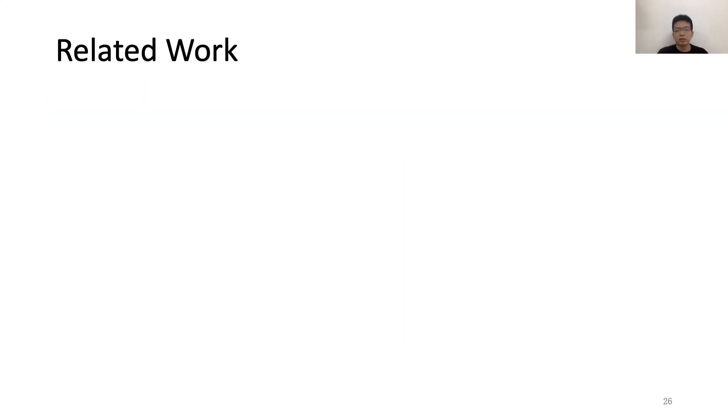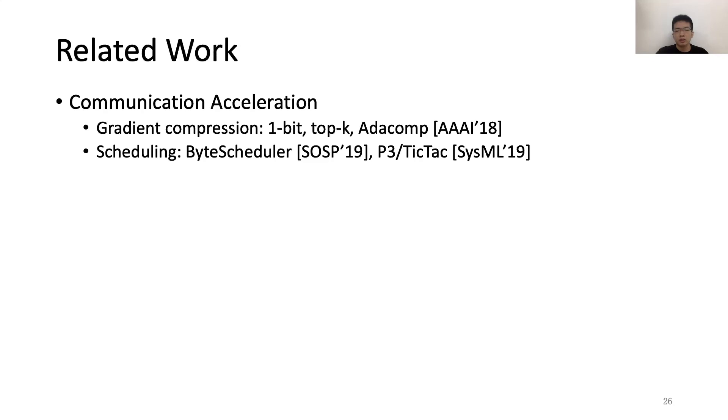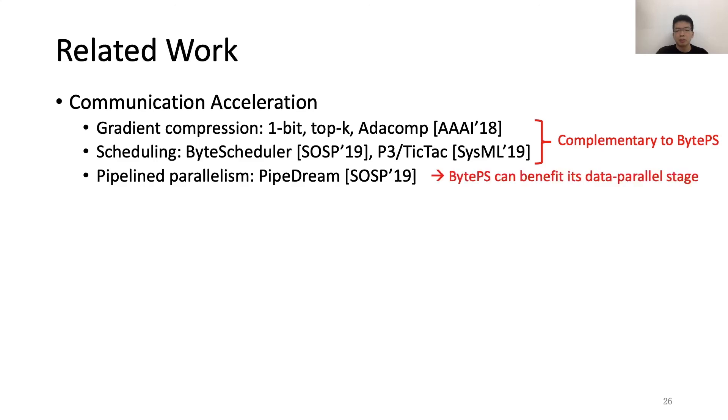Next I would like to mention a few related work. The first dimension is communication acceleration. Some previous work proposes gradient compression and scheduling to accelerate the DNN training and communication. These works are complementary to BytePS, and actually we have integrated them as optional features in our system. Some researchers propose pipelined parallelism like PipeDream. BytePS can benefit PipeDream in the data parallel stage. There are also related work that proposes hierarchical all-reduce such as BlueConnect. But essentially, it is still all-reduce and cannot leverage the heterogeneous resources.